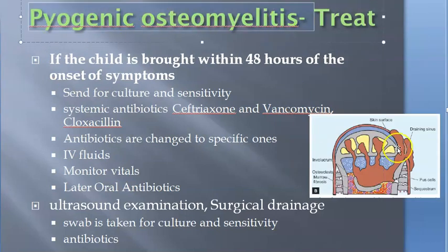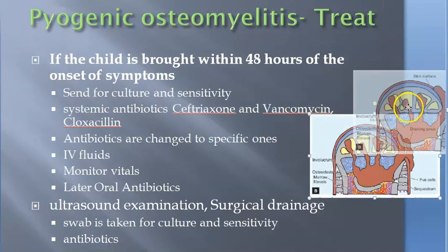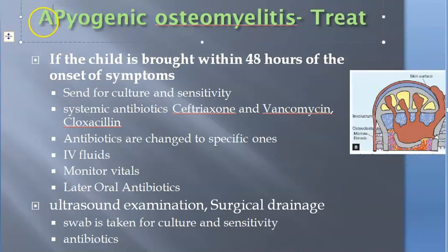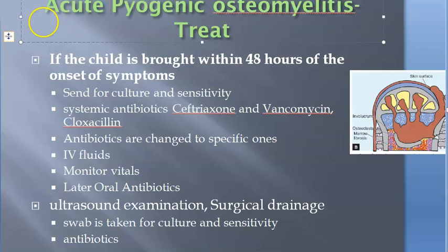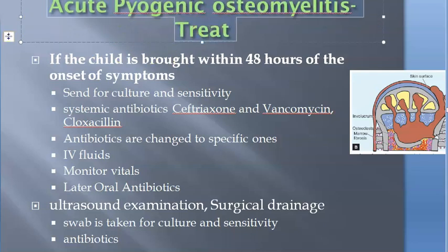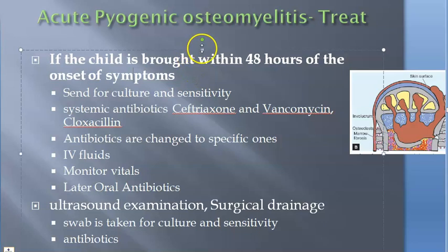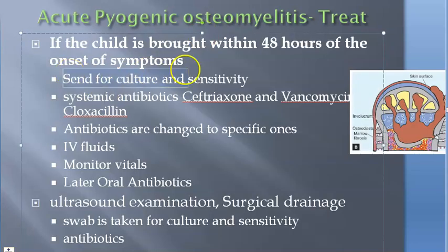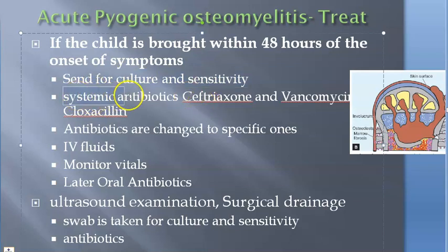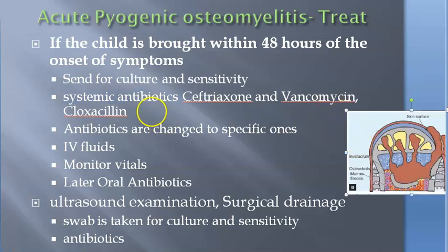How do you treat pyogenic osteomyelitis? For acute pyogenic osteomyelitis, if the child is brought early, you take the content — pus or any discharge — and send it for culture sensitivity. Then you start the child on antibiotics like ceftriaxone, vancomycin, ceftriaxone and cloxacillin.